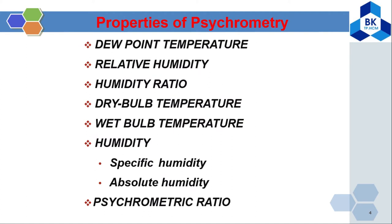Now, the properties of psychrometry. There are several properties: first is dew point temperature, second is relative humidity, number three is humidity ratio, number four is dry bulb temperature, number five is wet bulb temperature, number six is humidity — divided into specific humidity and absolute humidity — and last is the psychrometric ratio.